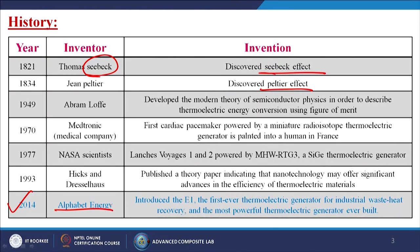Alphabet Energy Systems introduced the E1, the first ever thermoelectric generator for industrial waste heat recovery and the most powerful thermoelectric generator ever built. From industry — whether it is a thermal-based or chemical-based industry — a huge amount of energy is generated due to chemical reactions or thermal power plants. We are not utilizing 100 percent of that energy; some energy is being wasted. If we are able to catch that particular waste energy and convert it into electricity, that will be an added advantage.